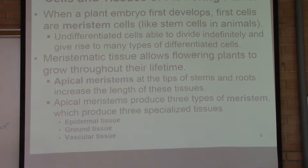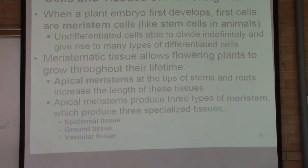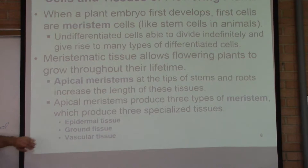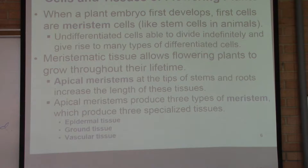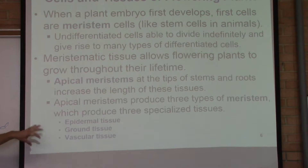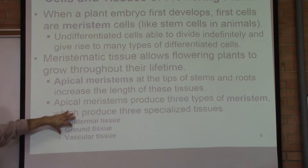Epidermal tissue is just like the epithelium of humans and animals — the surface cells that come into contact with the outside or inside of the body. In plants, those cells are epidermal cells present on the surface, like the dermis of skin. Ground tissues are the ones that make the bulk of the plant, present in roots, shoots, and everywhere inside. They increase the size and storage capacity of the plant.